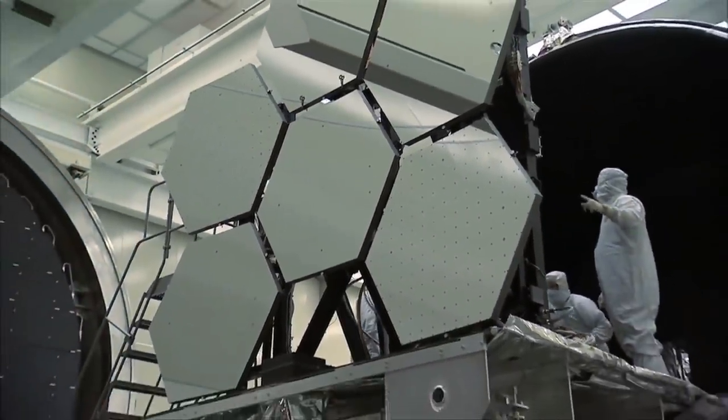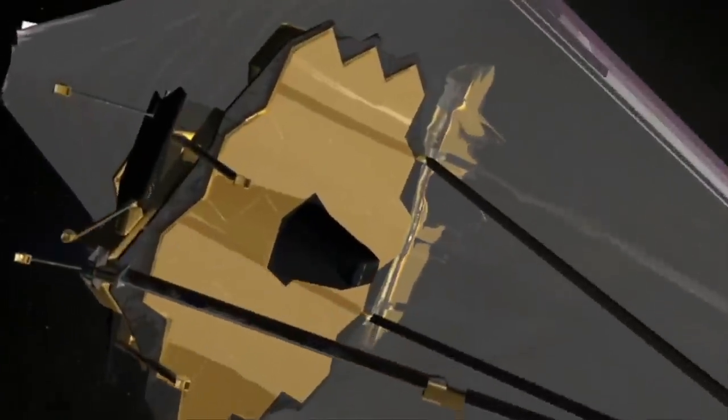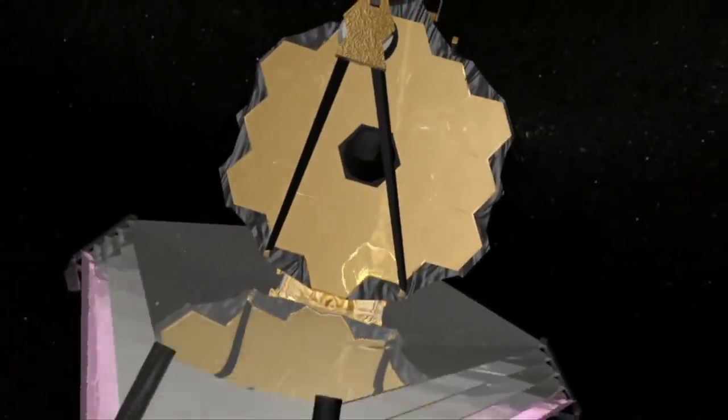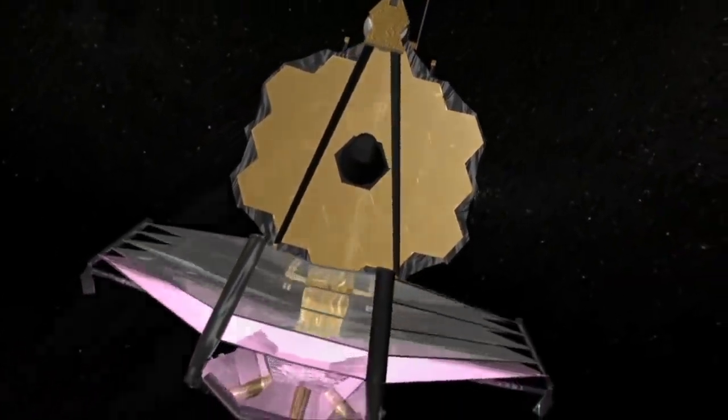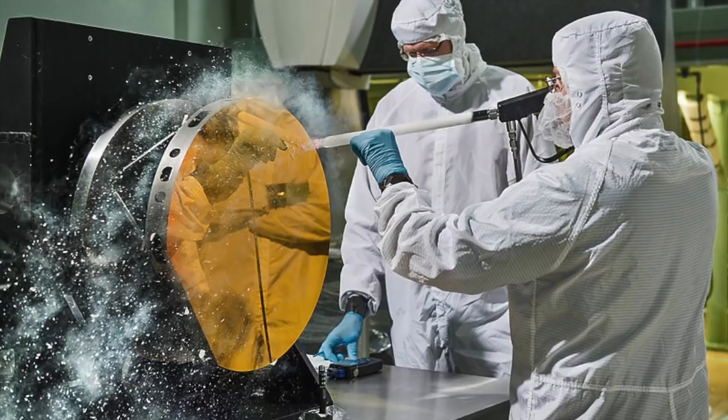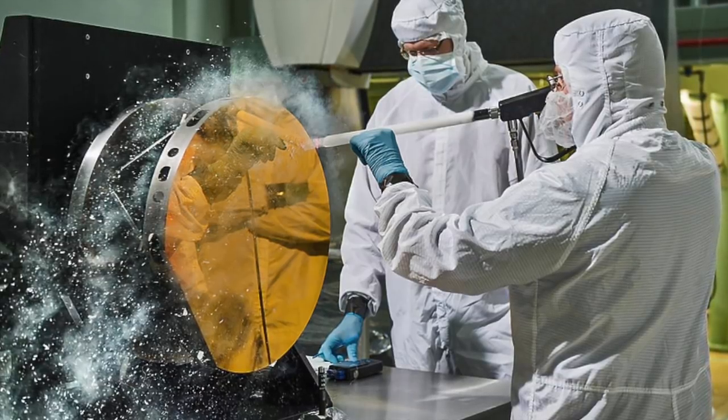NASA is no stranger to high numbers of single point failures, the most recent Mars rover had over a hundred and all worked perfectly. And as I said, everything with JWST was very thoroughly tested down here on earth many times, but a clean room on earth is not zero gravity space, so things can still go wrong.